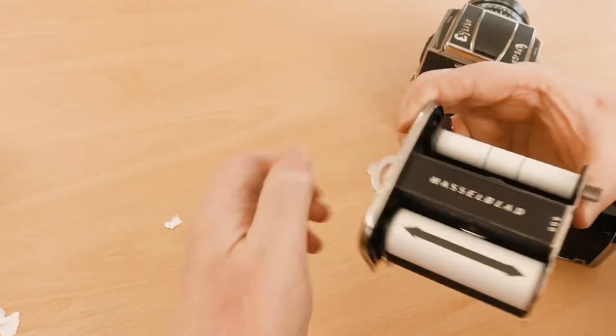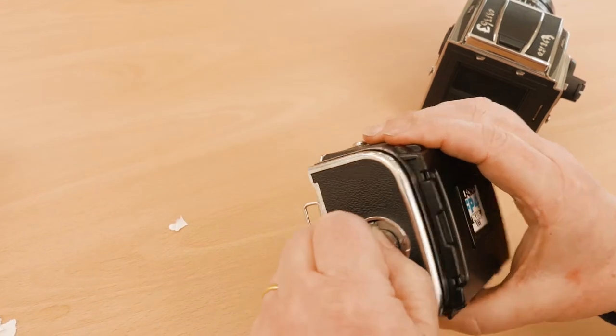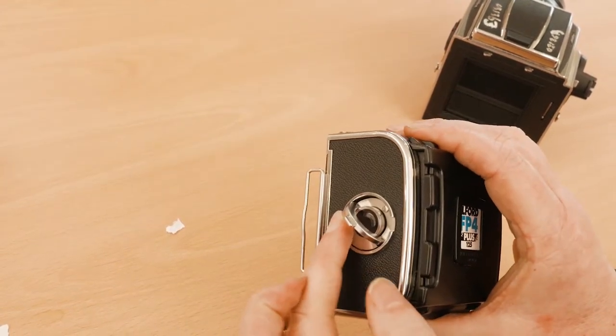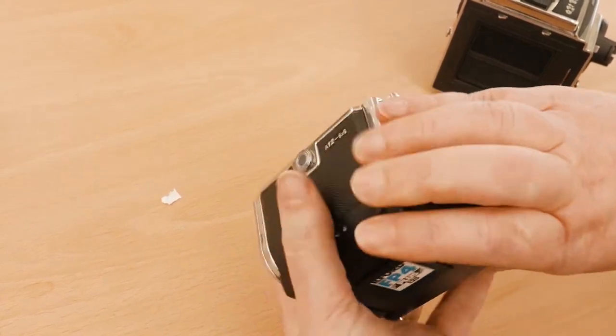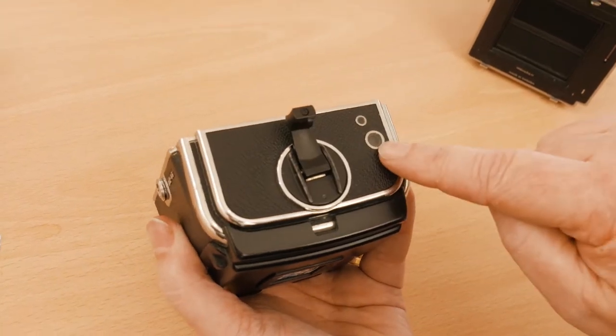Once I've done that, I can reinsert the carriage, turning this to allow me to insert it, return it, close it and then I must wind this handle until number one appears.